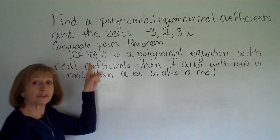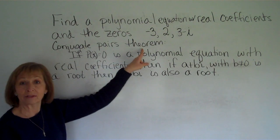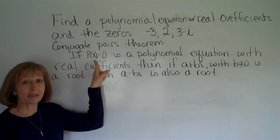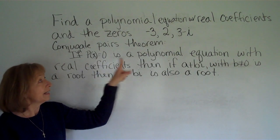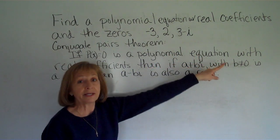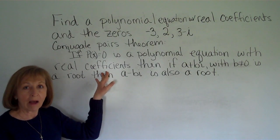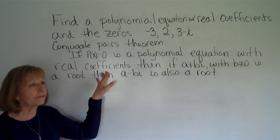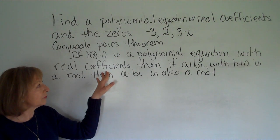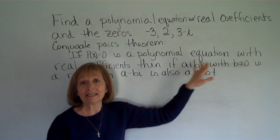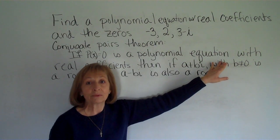I need to refer to what's called the conjugate pairs theorem. And for the conjugate pairs theorem it says if p of x equals 0 is a polynomial equation with real coefficients, so no i's as coefficients in front of the terms as I go through the polynomial equation, then if a plus bi is a root with b not equal to 0,